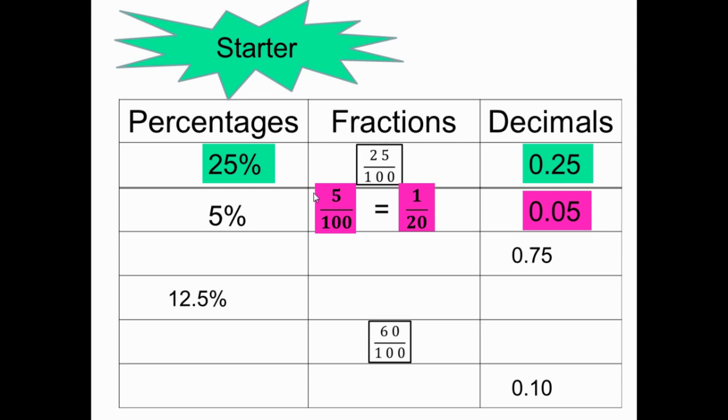0.75: as a fraction it's 75 over 100. To convert decimal to fraction, multiply by 100. As a percentage, it's 75%. The next one, 12.5% - as a fraction is 12.5 over 100, which simplifies to 1 over 8. As a decimal, 0.125.